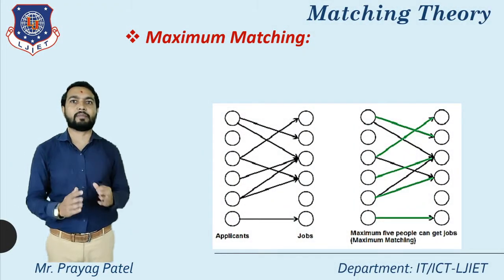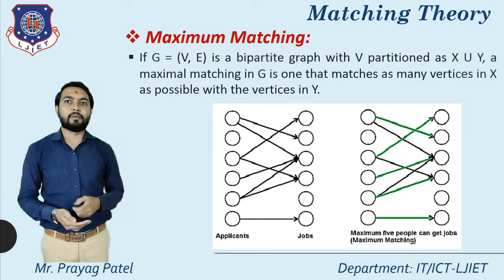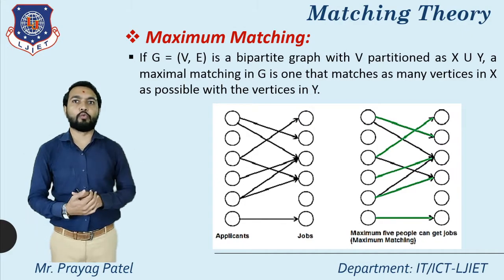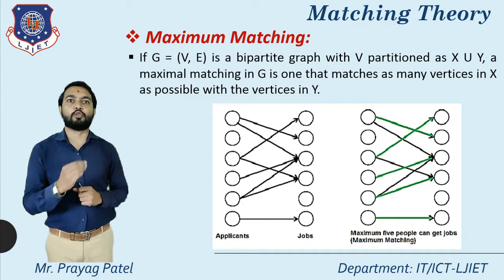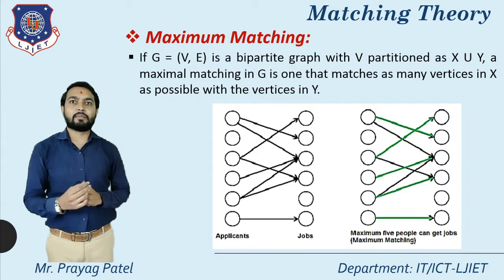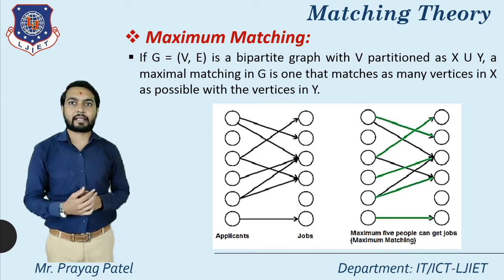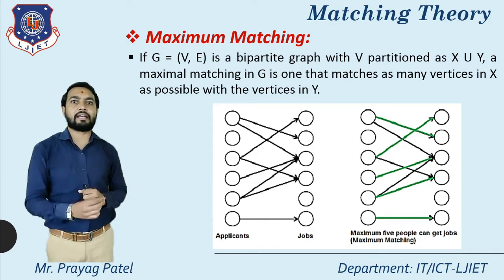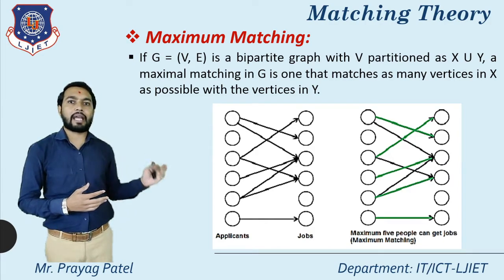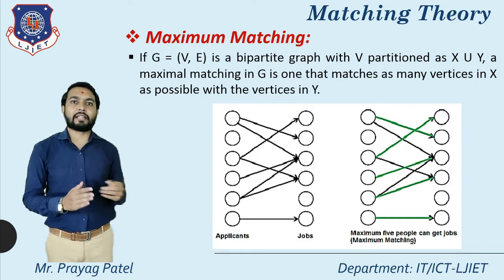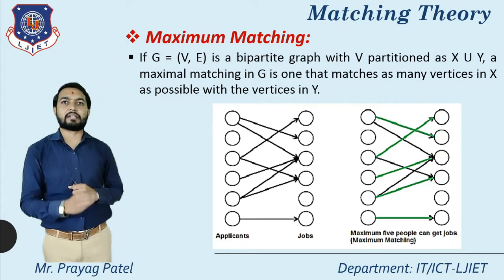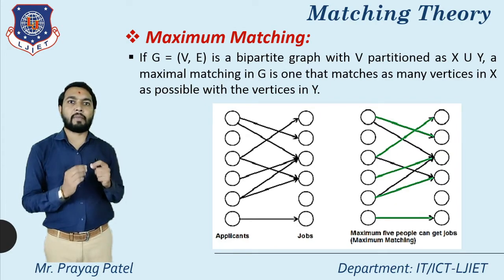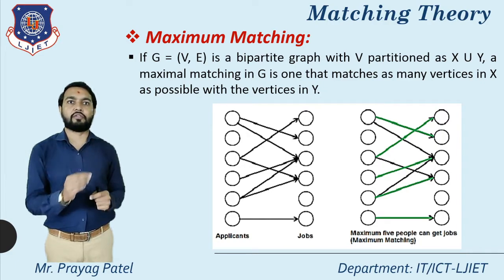First we discuss about what is maximum matching. Maximum matching means: if G = (V, E) is a bipartite graph with V partitioned as X union Y, a maximum matching in G is one that matches as many vertices in X as possible with the vertices in Y. So X and Y are two sets, and the combination of X and Y gives us the maximum matching.